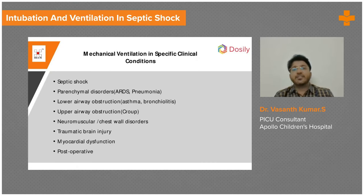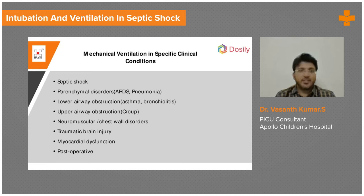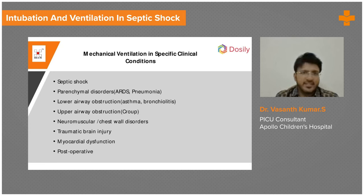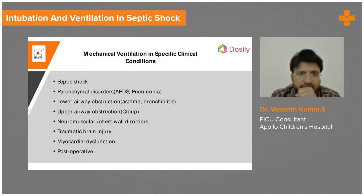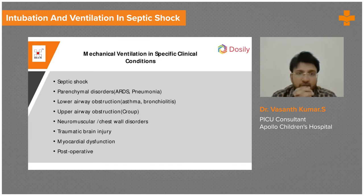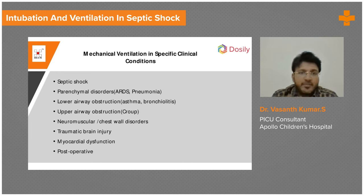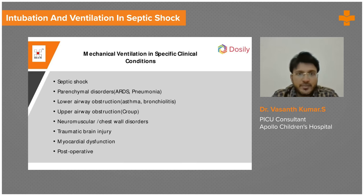These are the different situations we'll be discussing on how to ventilate them: septic shock, parenchymal problems like pneumonia and ARDS, lower airway obstruction, upper airway obstruction, how to ventilate a neuromuscular patient, traumatic brain injury, and myocardial dysfunction like post-op myocardial dysfunction and other post-operative patients.